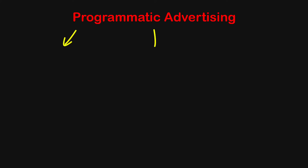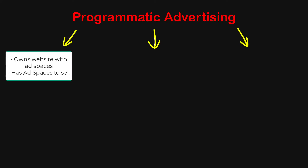When you look at programmatic advertising as a whole, there are generally three parties involved in all the processes. The first one is the company that owns the website or app and sells ad spaces — these are called publishers.